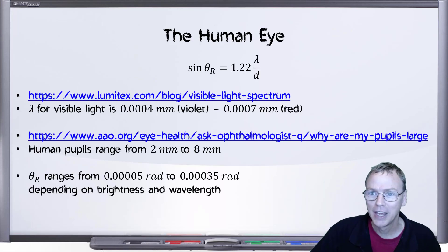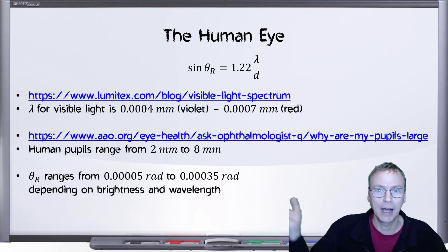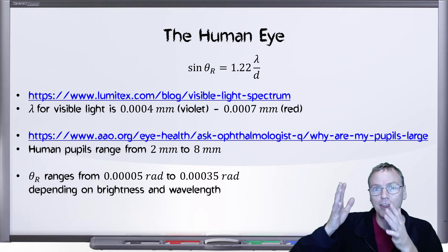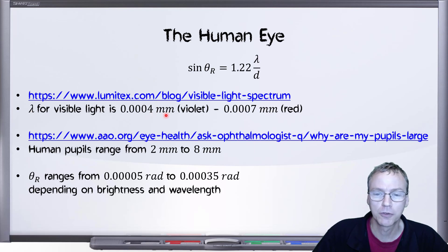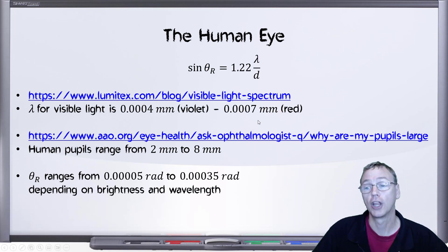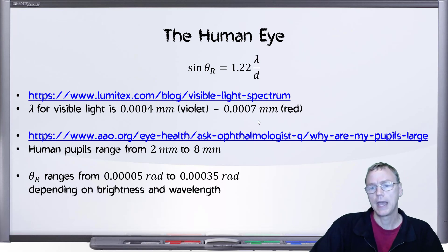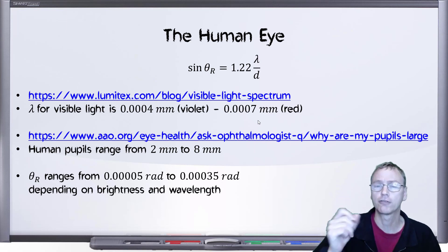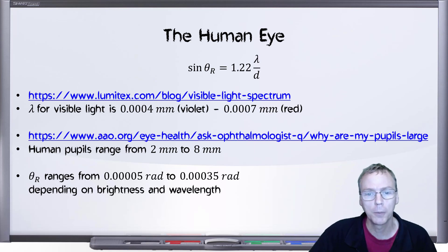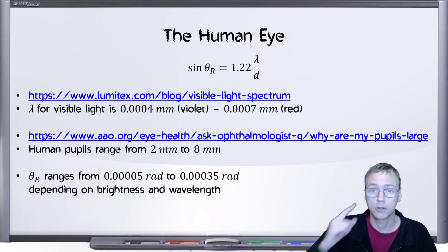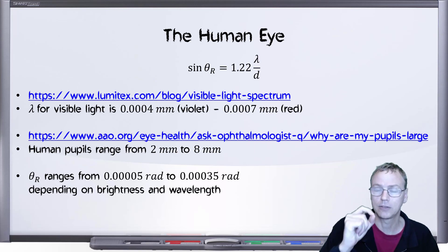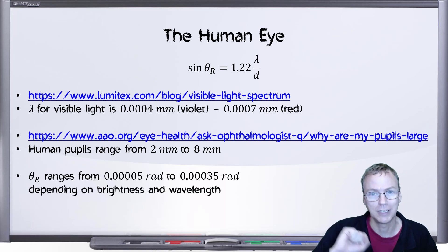What kind of angles are we talking about then? Let's start with the human eye. The spectrum for visible light goes from 400 nanometers to 700 nanometers — I've converted that to millimeters for convenience. The longer wavelengths are down at the red spectrum, and the shorter wavelength or higher frequency is at the violet end of the rainbow. So that's the lambda. What about the d, the diameter? According to ophthalmologists, the range for the human pupil goes from 2 millimeters in bright sunlight to as big as 8 millimeters in very dim light.